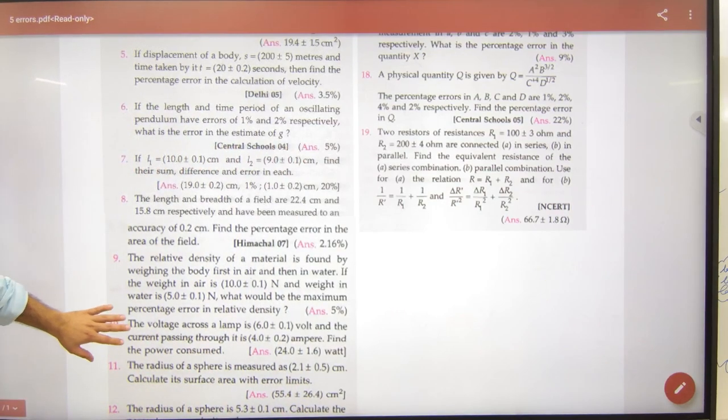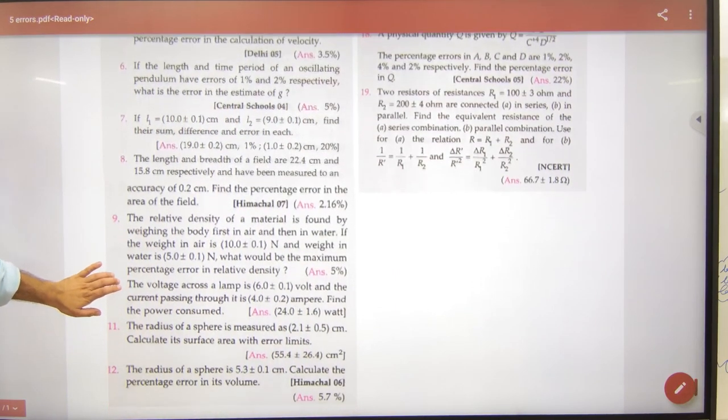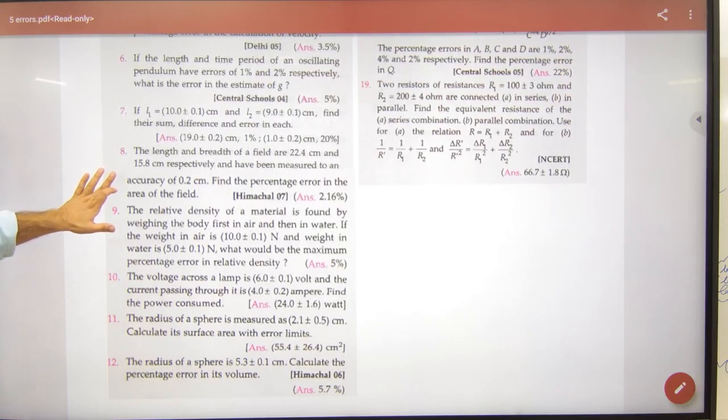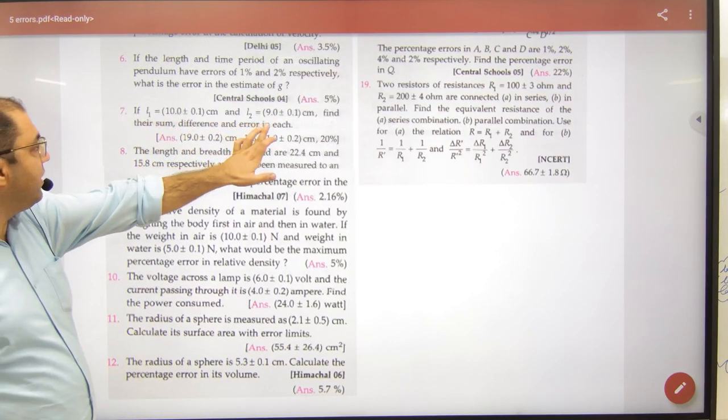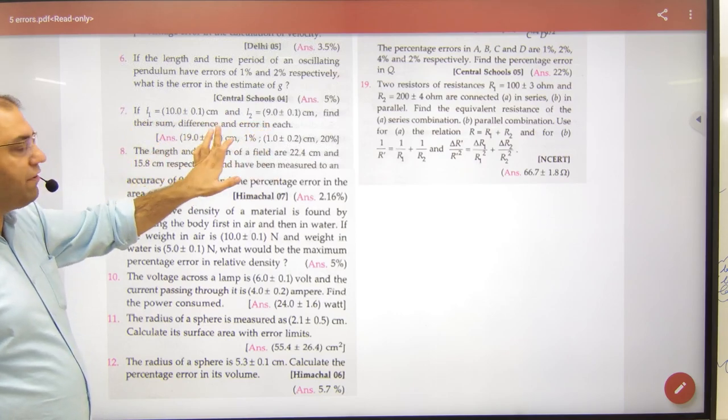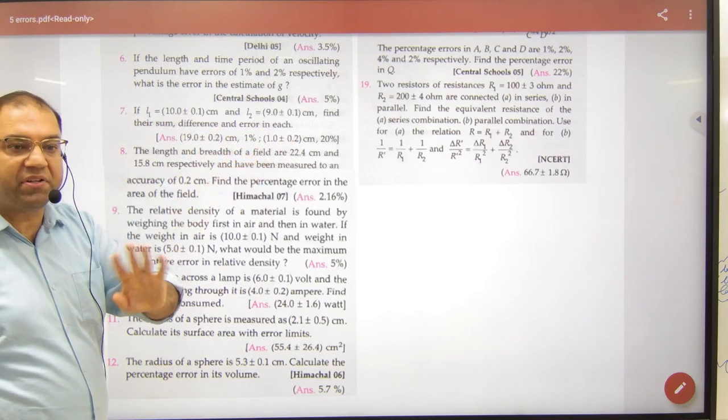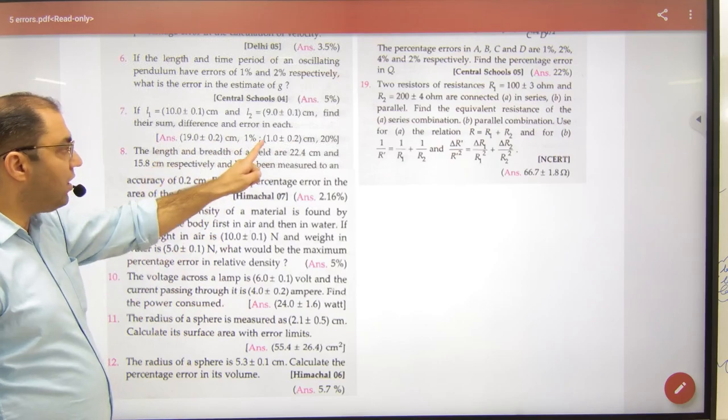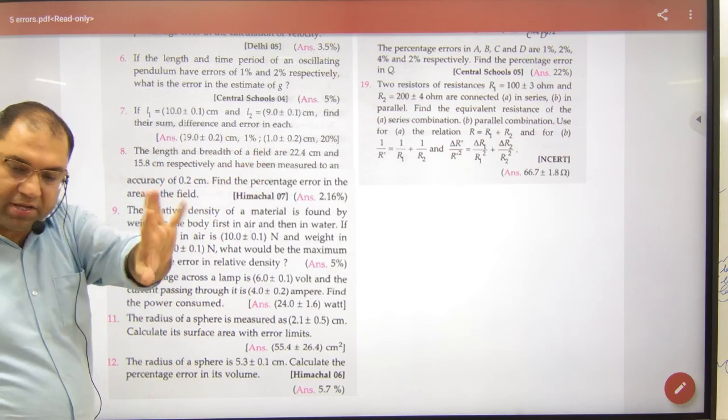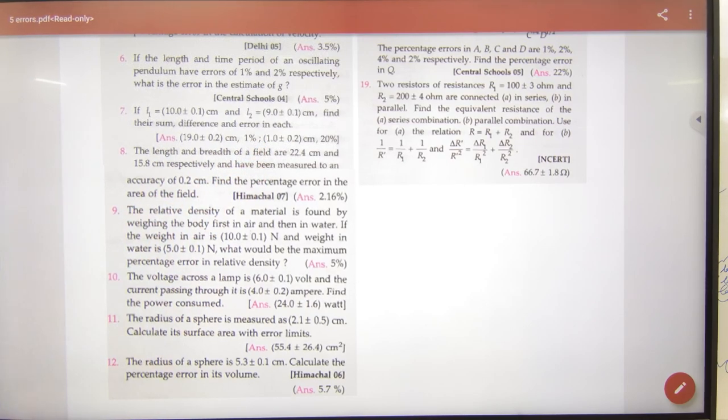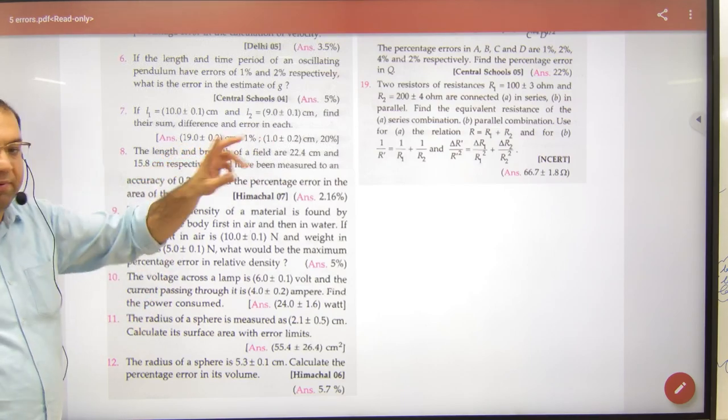Next question number 7-8, length given is, find their sum difference, this one percent twenty percent is not seen, this answer is done, this is the answer. I don't know why this percentage is calculated. So you have to know length with error, add and subtract. So you have two answers. That's right.